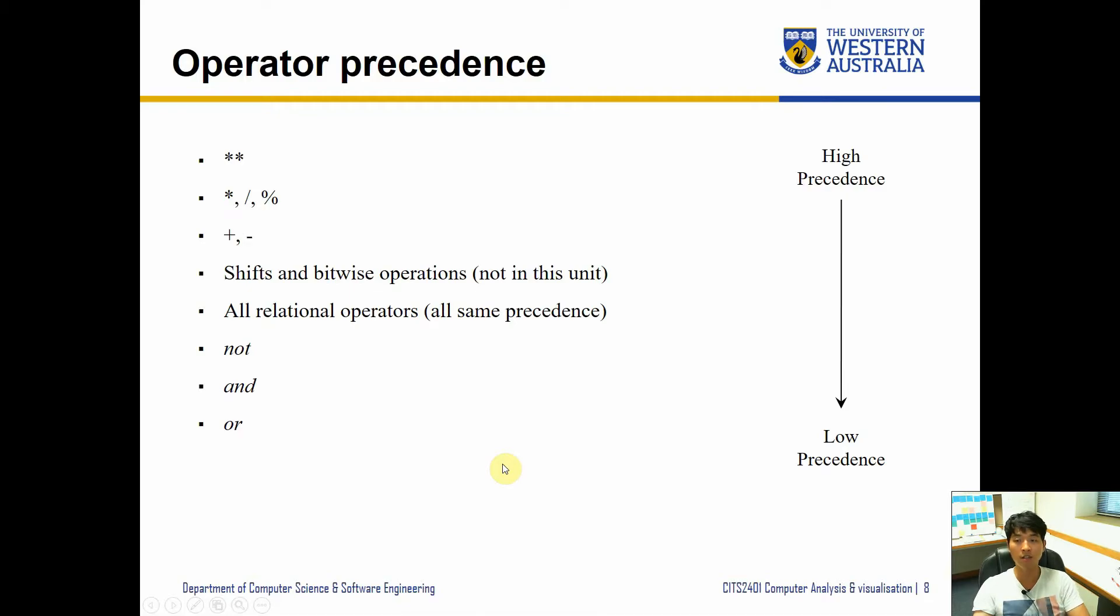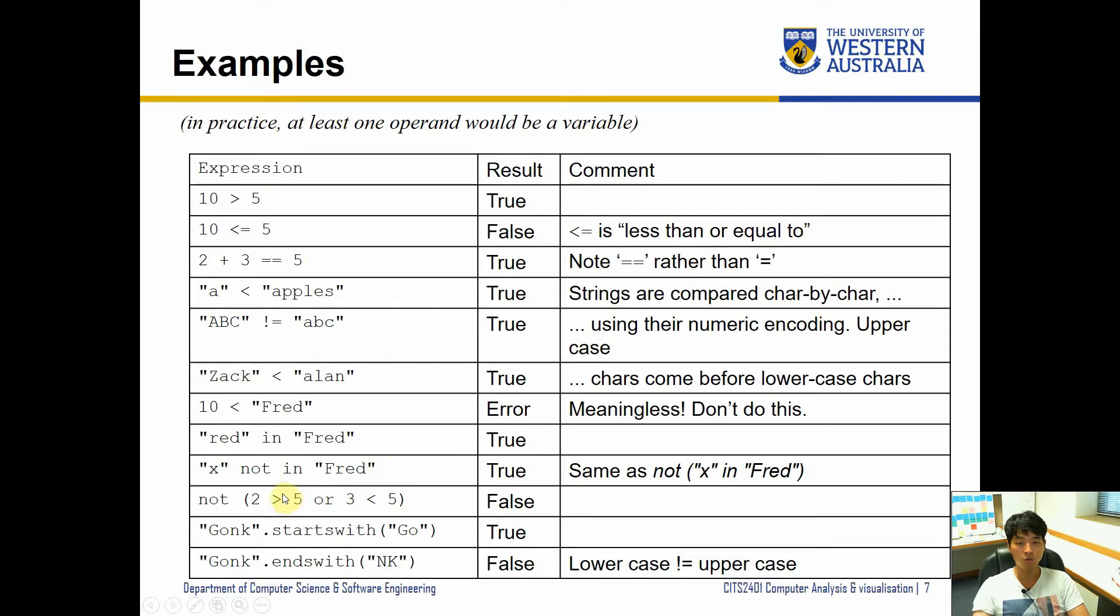You can add brackets to differentiate which ones get executed first. You can have a look at the next slide where the order has been arranged for us. Numeric operators will be executed first, followed by relational operators, and then lastly we have not, and, and or. Let's look at an example: two is not greater than five, three is less than five. This is false, this is true. True or false returns true, and not true means false, therefore the result is false.